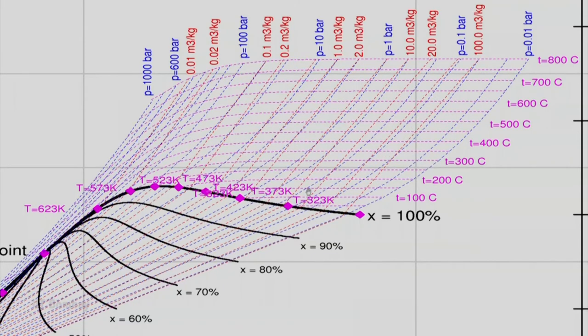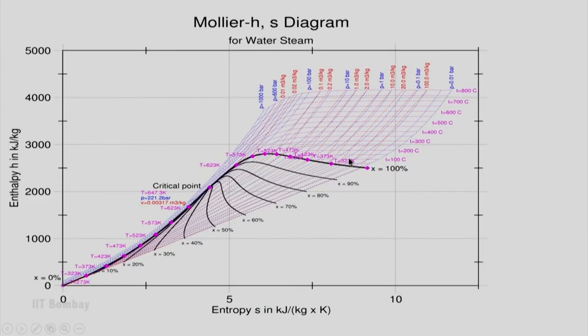So, somewhere here my state 1 will be, sorry, this will be my state 2 because this is after expansion. So, this is my state 2 and therefore, I can locate that state 2 over here. So, this is state 2 and I know that the state 1 to state 2 process, 1 to 2 process is isenthalpic process and the y axis being enthalpy axis, I can just draw a horizontal line passing through this point 2 and on this line somewhere the point 1 would lie, that is what I know.